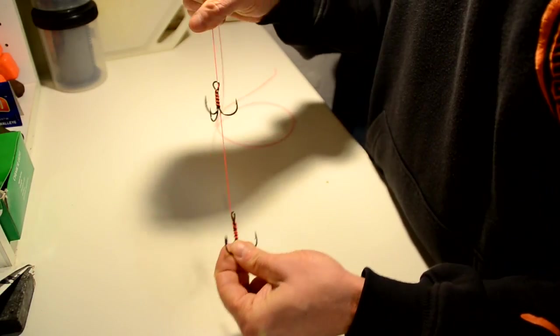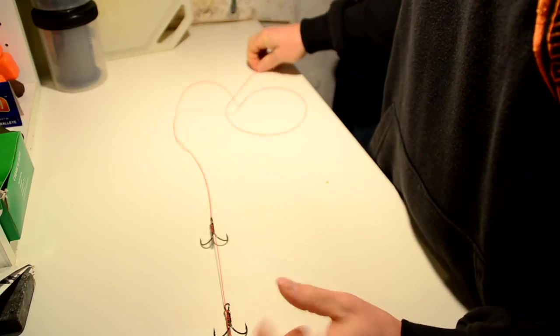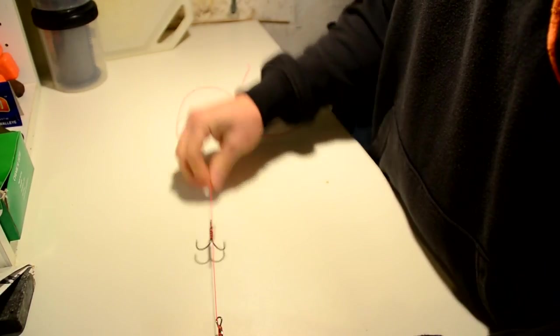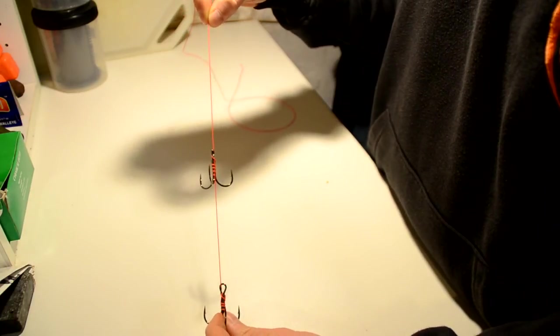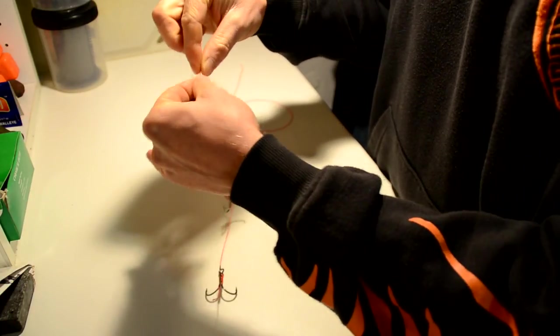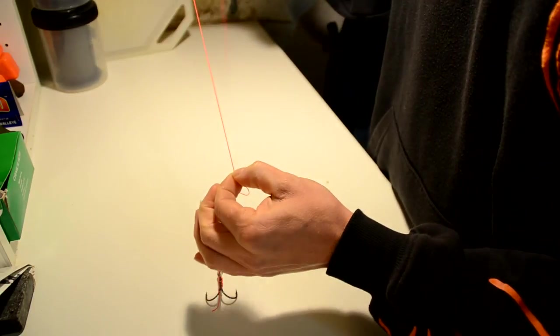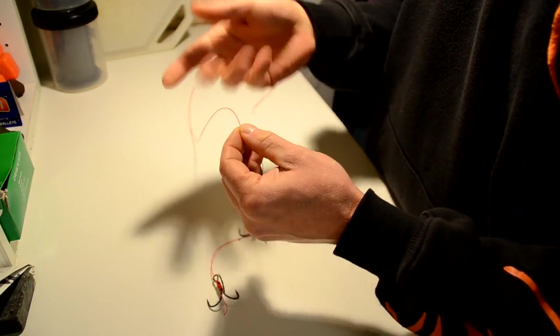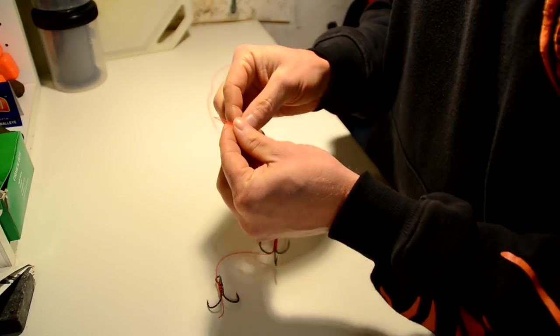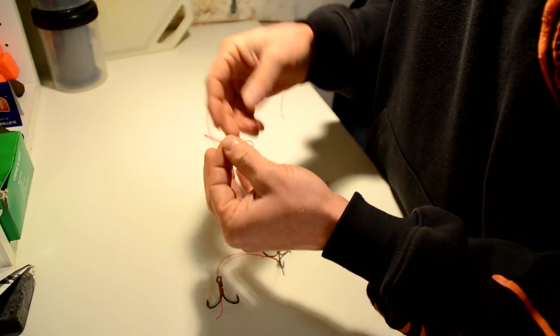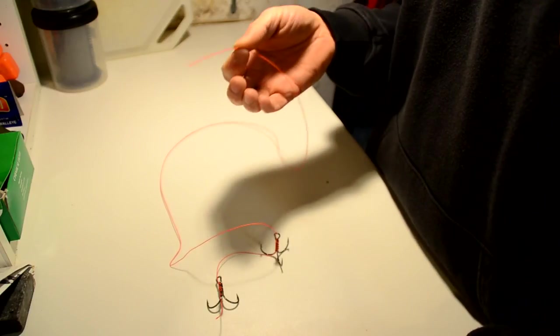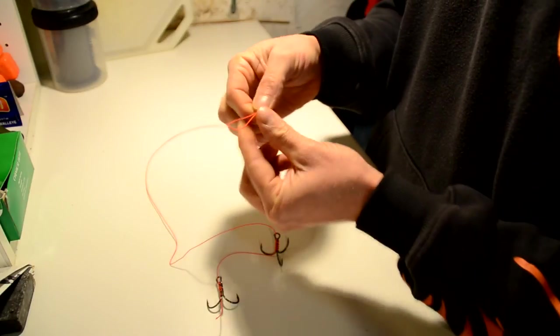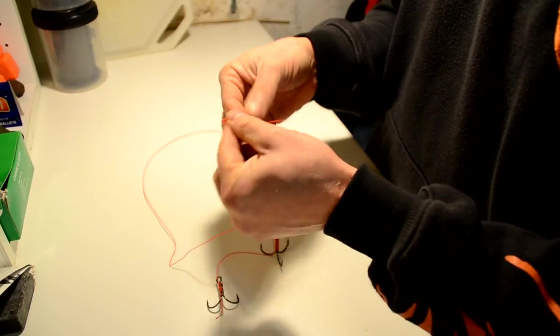There's the finished arrangement. Normally I tie these as a combi rig. I use like this wire, and from this part and the section up, I use fluorocarbon. So normally I tie that with a knot that joins the two materials.